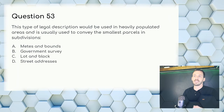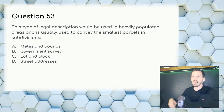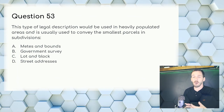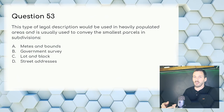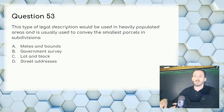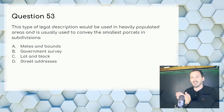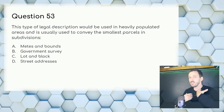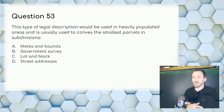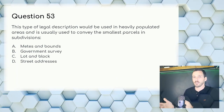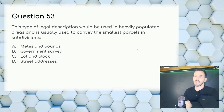Question 53: This type of legal description would be used in a heavily populated area and is usually used to convey the smallest parcels and subdivisions. Street addresses are informal and not a legal description, so we cross that off. Answer: C, lot and block.